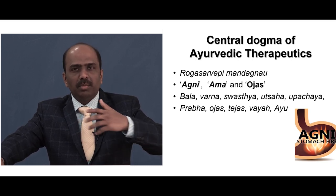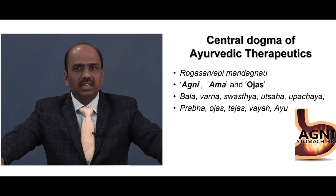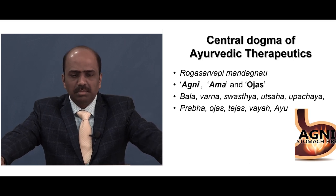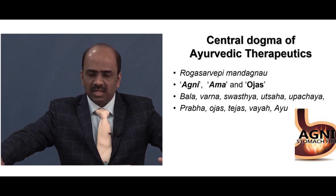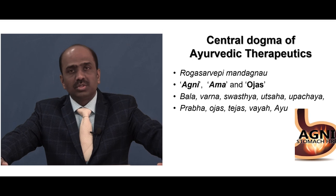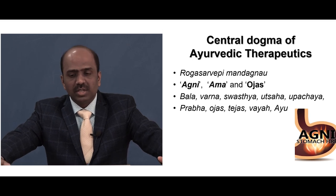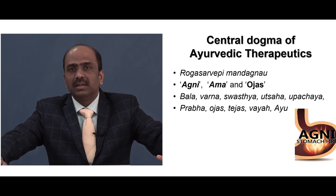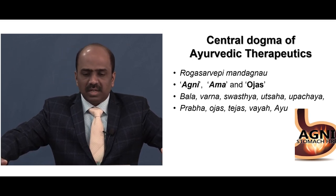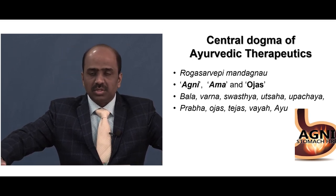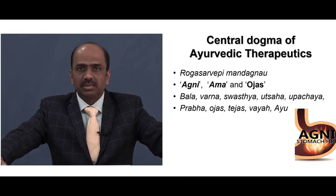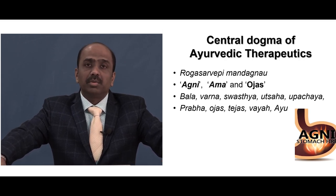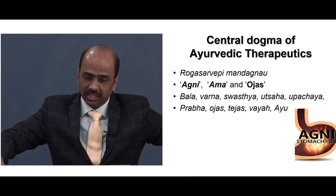The proper functioning of Agni leads to Bala — strength, Varnya — color, Swasthya — health, Utsaha — enthusiasm, Upachaya — development, Prabha — luster, Ojas, Tejas, Vaya, and Ayyuhu. All these aspects depend on the proper functioning of Agni.